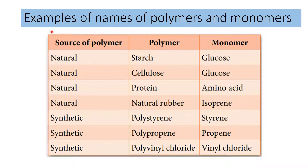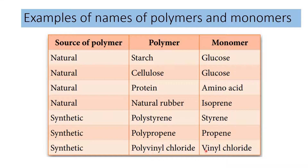Here are some examples of polymer and monomer names. For natural polymers: starch and cellulose both come from glucose as the monomer; protein has amino acid as the monomer; natural rubber has isoprene as the monomer. For synthetic polymers: polystyrene has styrene, polypropene has propene, and polyvinyl chloride has vinyl chloride. If the name has 'poly' at the front, just remove it to get the monomer name.